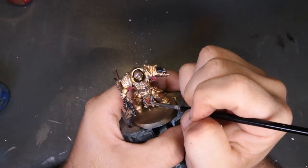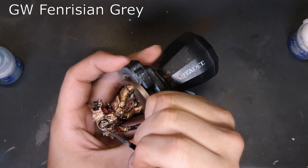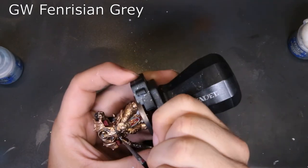Same concept here with the Fenrisian Grey. We started with our Thousand Sons at 100%, then we went to our Calgar Blue about 60%, Fenrisian Grey we're doing 30% of the actual exposed surface.